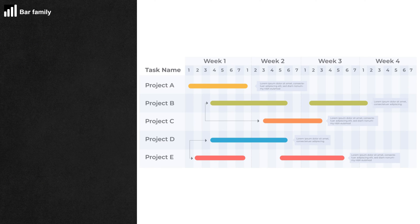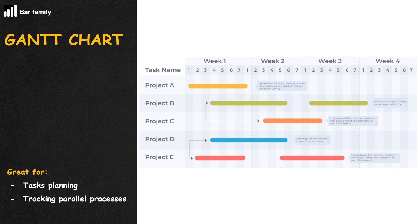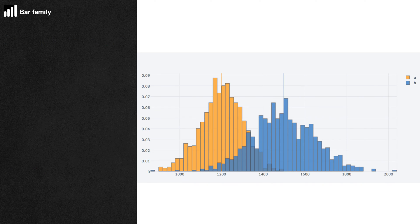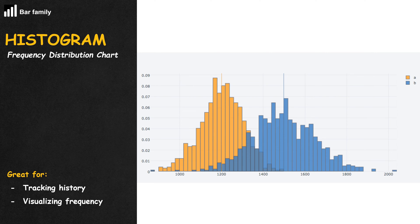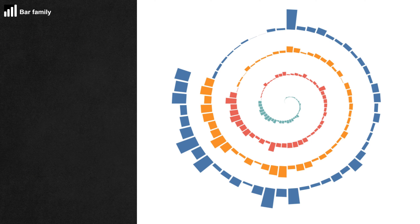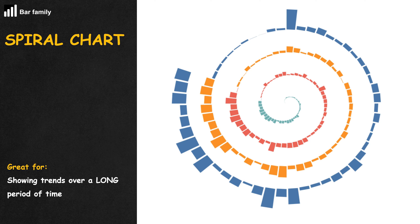Another popular variation of the range plot is the Gantt chart — basically the range plot, but used to show activities or tasks performed against time. When a bar or column chart depicts the frequency of a variable, it is called a histogram or frequency distribution graph. If your histogram cannot fit into a page, one solution is to bend the x-axis into a spiral. This is called the spiral chart.